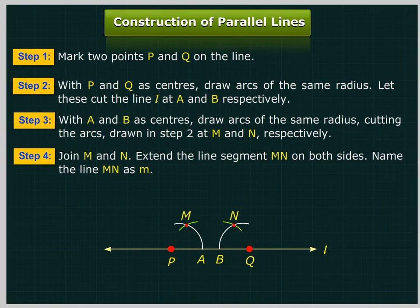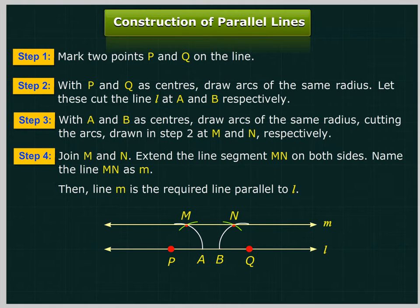Join M and N. Extend the line segment MN on both sides. Name the line MN as m. Then, line m is the required line parallel to L.